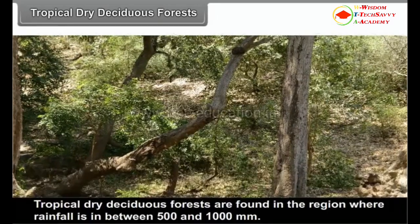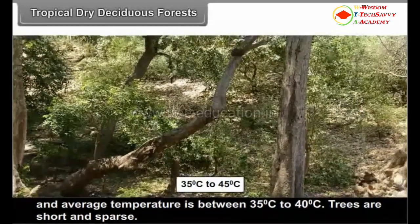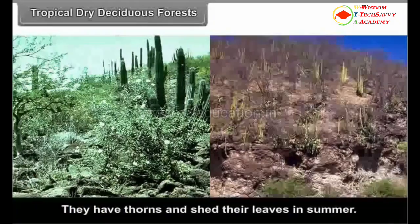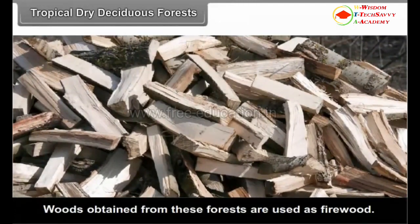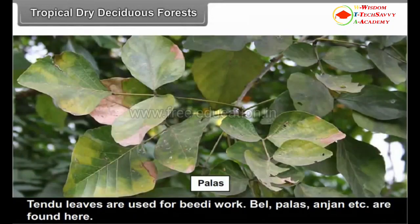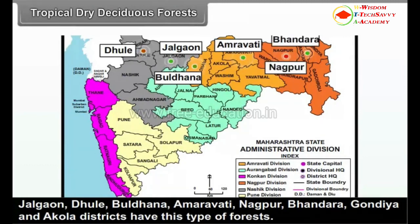Tropical dry deciduous forests are found in regions where rainfall is between 500 and 1000 mm and the average temperature is between 35 to 40°C. Trees are short and sparse, have thorns, and shed their leaves in summer. Woods obtained from these forests are used as firewood. Tendu leaves are used for bidi work. Bell, Palas and Anjan trees are found here. Yavatmal, Dhule, Buldhana, Amravati, Nagpur, Bhandara, Gondia and Akola districts have this type of forests.